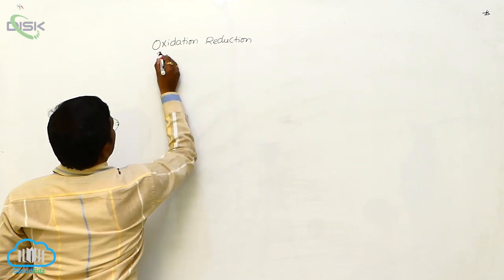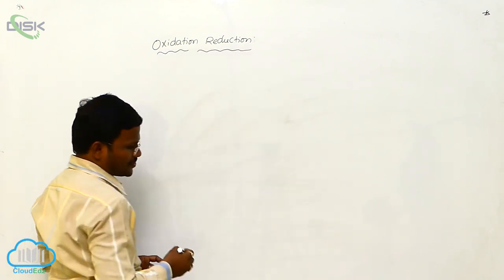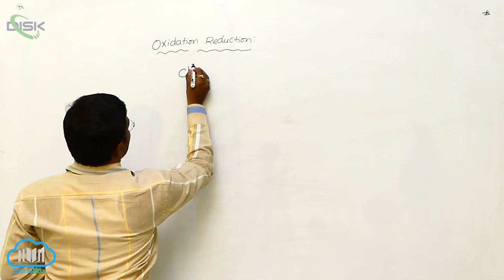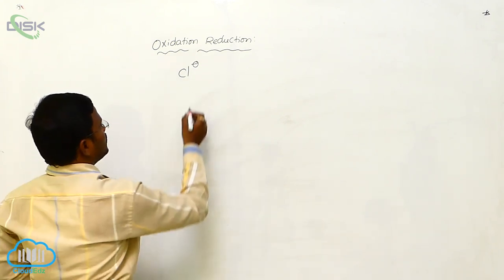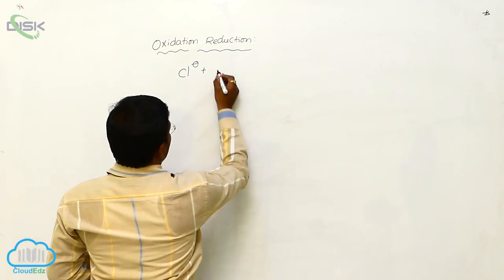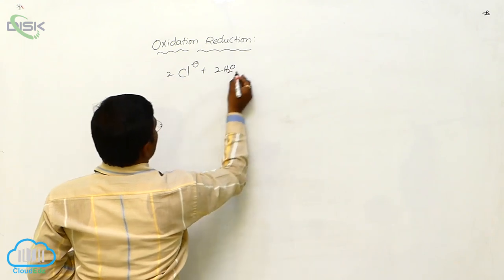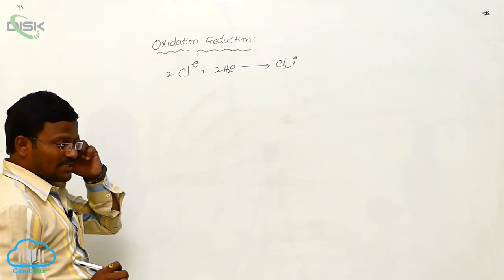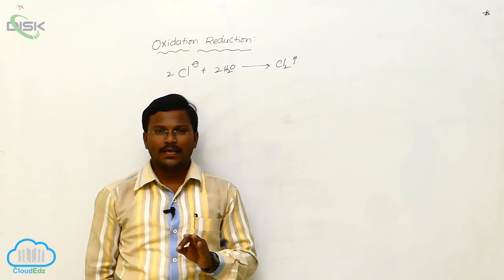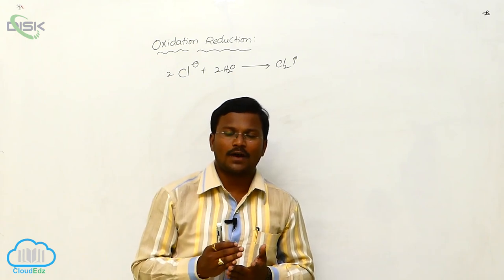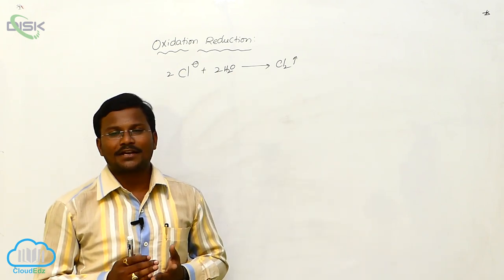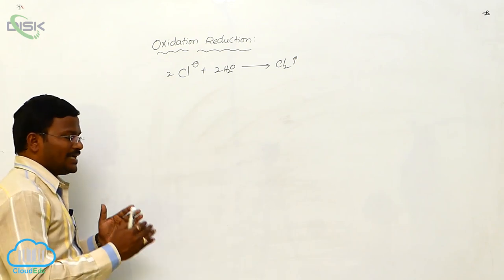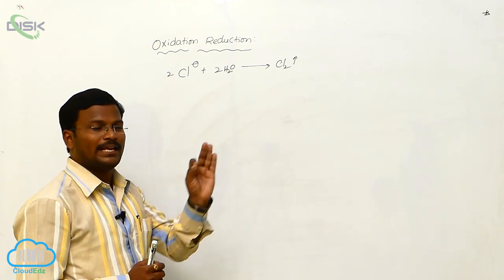Oxidation and reduction take place simultaneously for the extraction of pure metals or some elements from their ores. For example, we can represent the isolation of chlorine from brine solution. When brine solution is dissolved in water, it produces or evolves chlorine gas. In every extraction method — like extraction of iron from iron ore, extraction of copper from copper ores, zinc from zinc ores, and aluminum from alumina — all these processes include reduction of the metal.